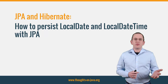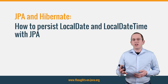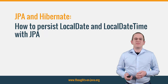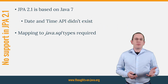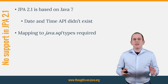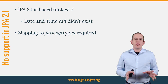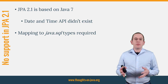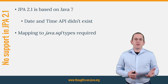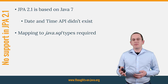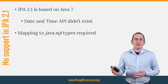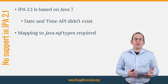You either use Hibernate 5, which provides proprietary support for the Date and Time API, or you take a few minutes to implement an attribute converter like I show you in this video. JPA was released before Java 8 and the Date and Time API simply didn't exist. The temporal annotation can only be applied to attributes of type java.util.Date and java.util.Calendar. If you want to store a LocalDate attribute in a date column or a LocalDateTime in a timestamp column, you need to define the mapping to java.sql.Date or java.sql.Timestamp yourself.